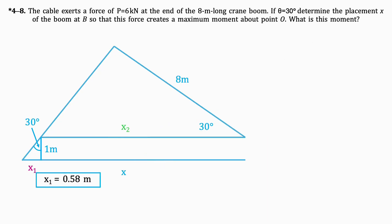Now we'll solve for X2. We know that cos of 30 degrees is 8 over X2. By isolating for X2, we get that it equals 9.23m.